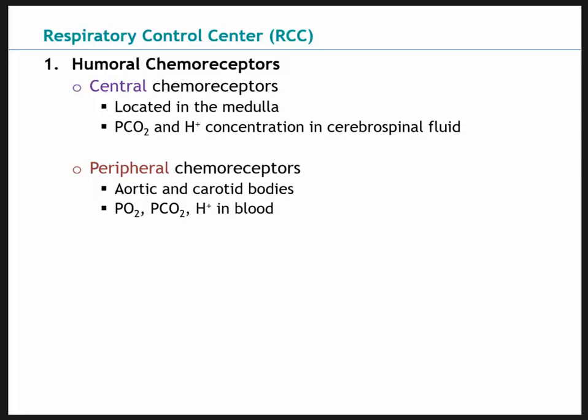Peripheral chemoreceptors are located outside the central nervous system, around the heart. The aortic bodies branch off the aorta and monitor blood that just returned from pulmonary circulation and is about to be pumped to systemic circulation. They respond to changes in blood partial pressure of CO2 and hydrogen concentrations. The carotid bodies monitor blood supply to the head and brain, detecting high concentration of CO2, low partial pressure of oxygen, and any hydrogen ions present.